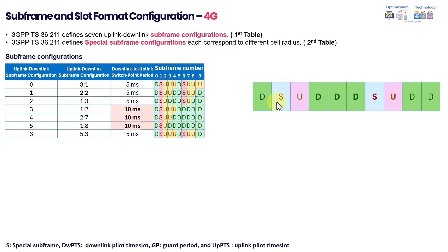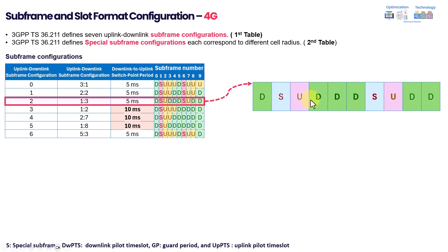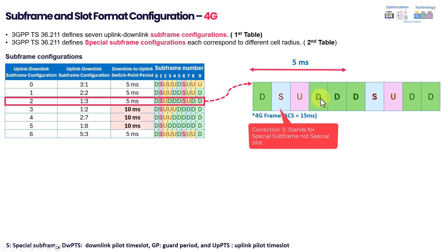The most commonly used configuration is configuration 2. As you can see, the first 5ms will have 1 downlink, then 1 special slot, then 1 uplink, then 2 downlink. This pattern is then repeated for the next 5ms.